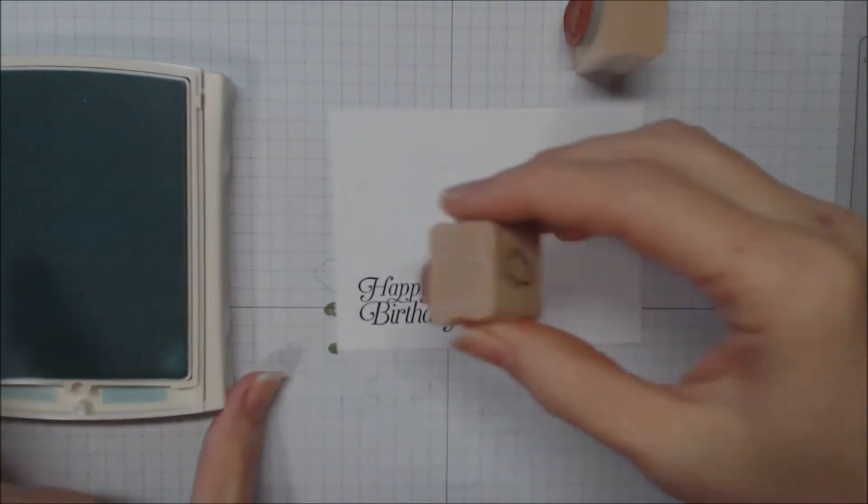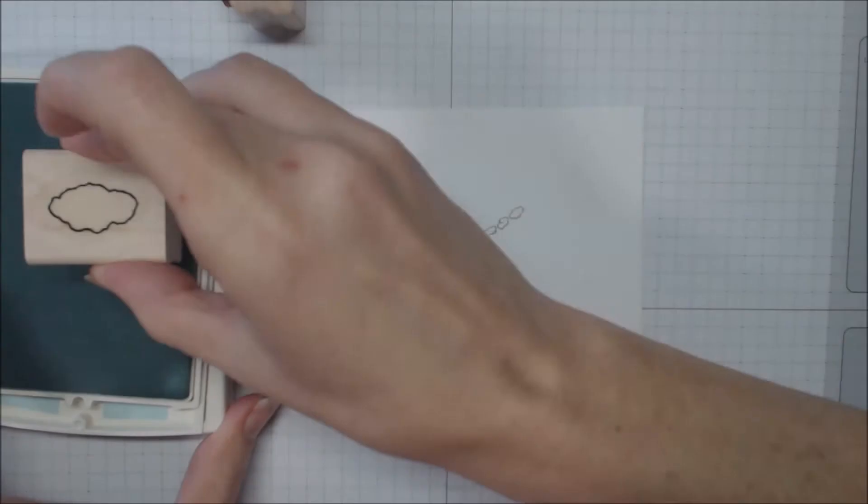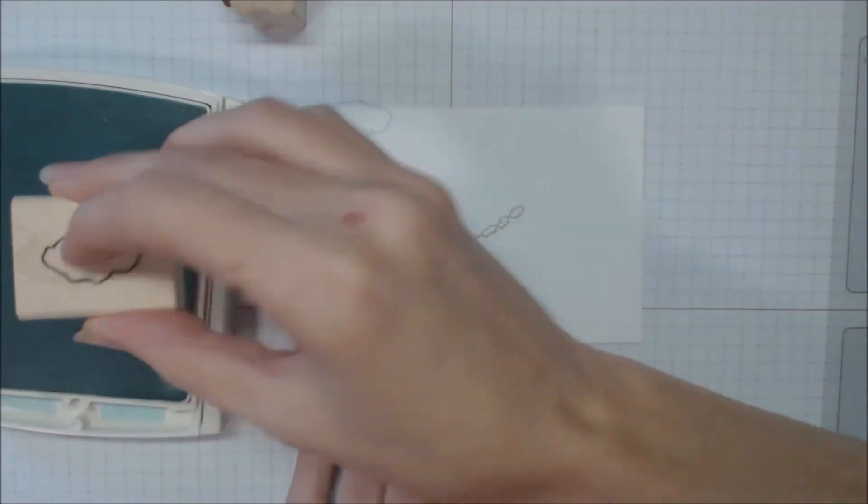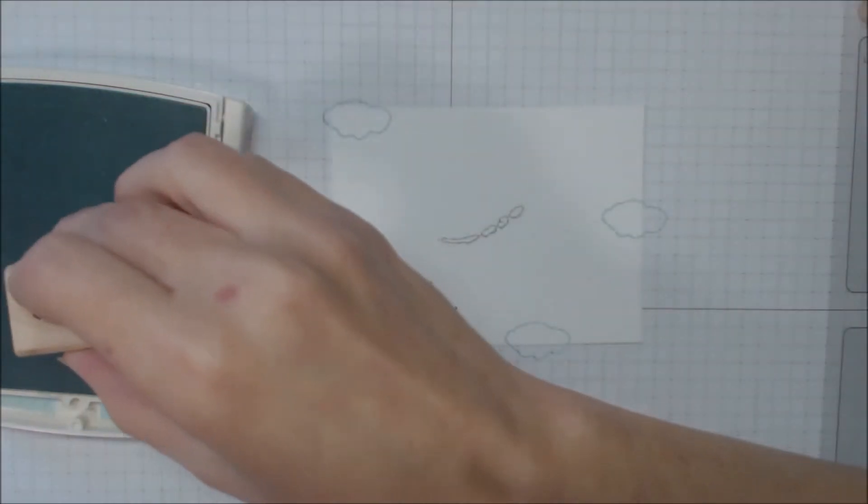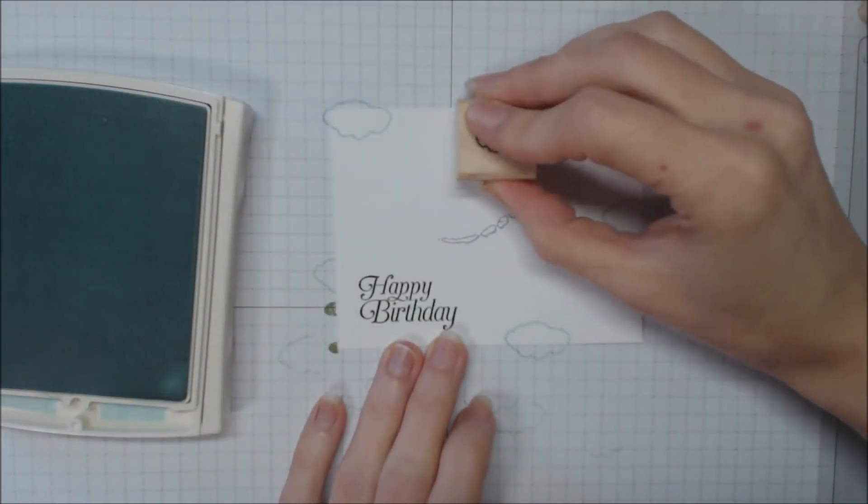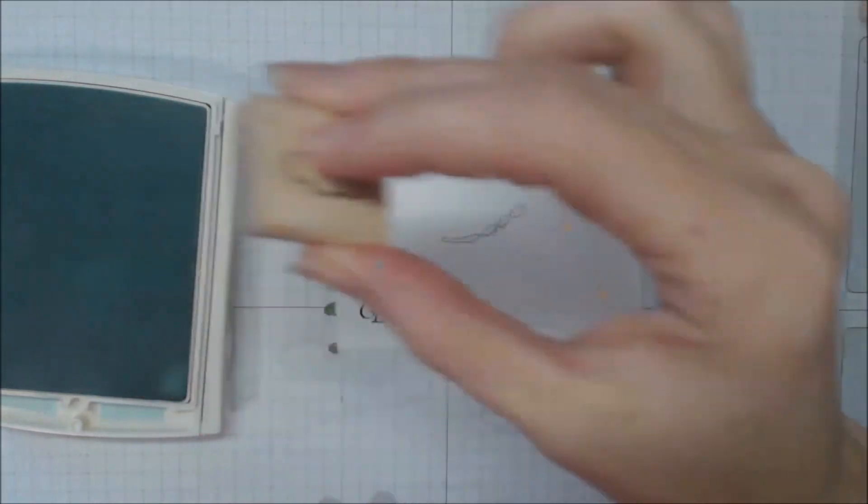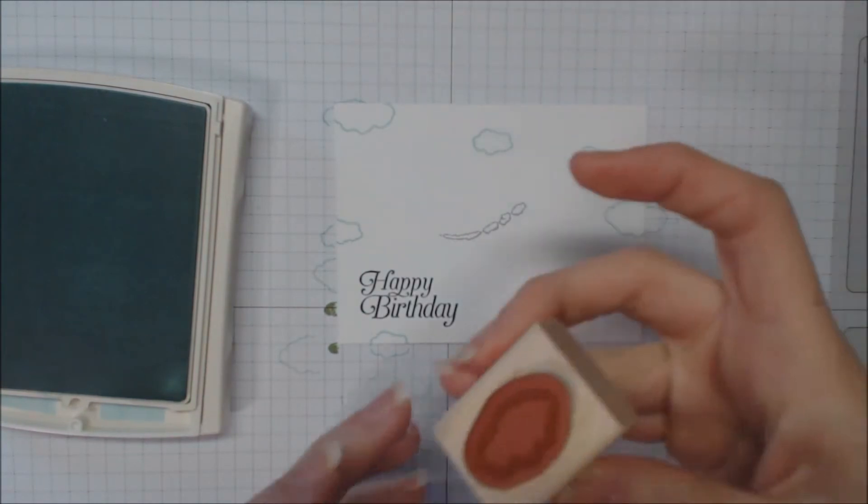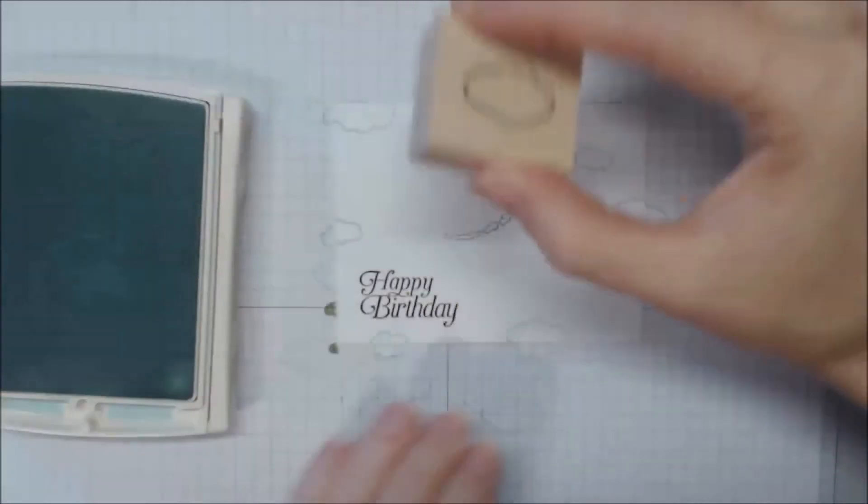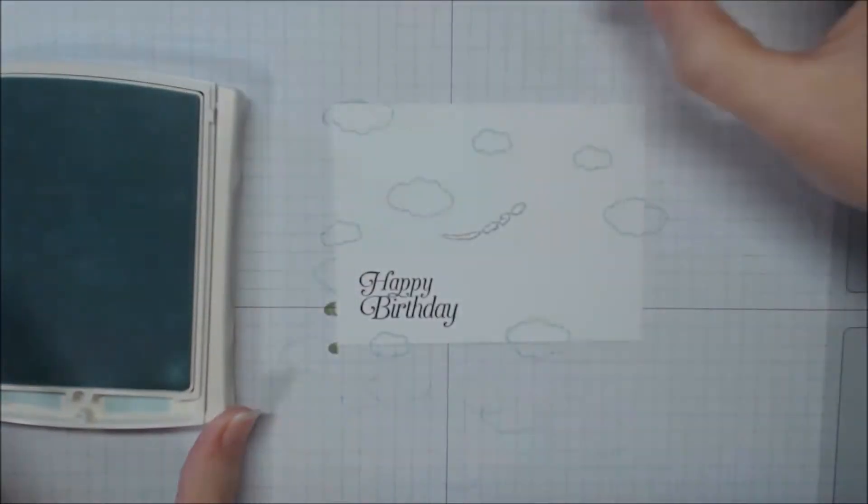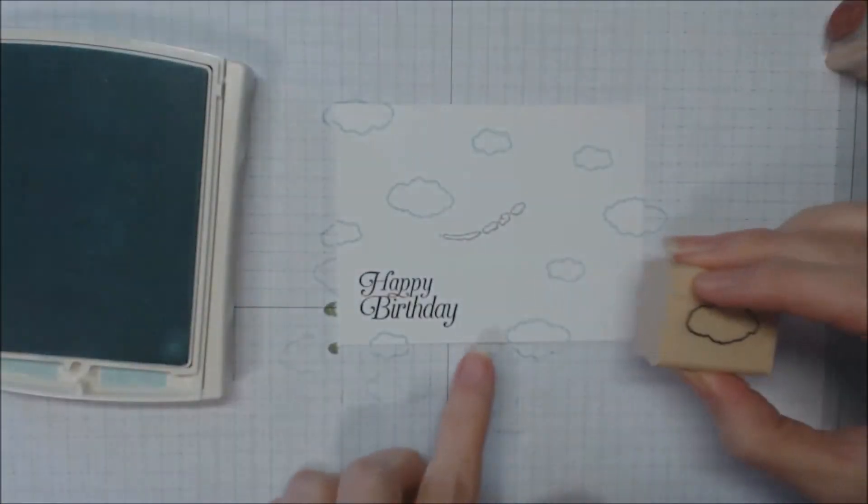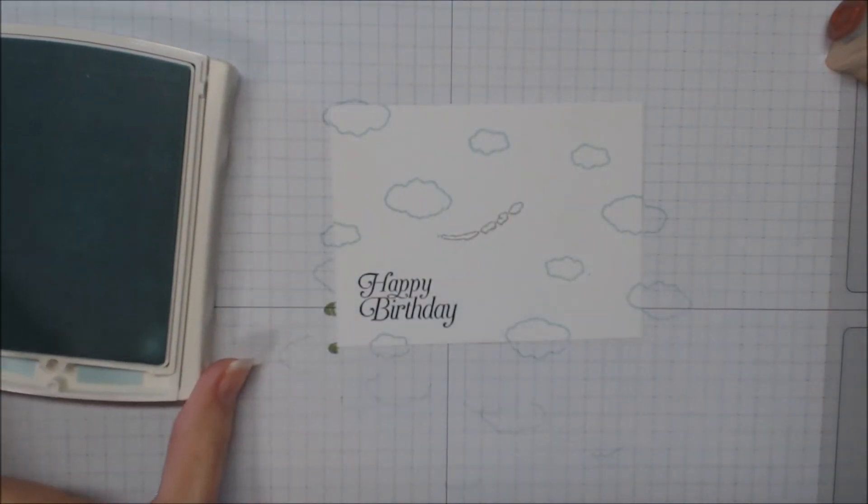Now we'll take that soft sky ink and the clouds and just randomly stamp some clouds in our sky. Being sure to go off the paper some. We're going to cut out the airplane. So it does not matter where my clouds are because my airplane will be above them. And you do want to kind of turn your stamp a little bit so that your clouds go different directions. Do one more cloud just kind of over there. There we go.